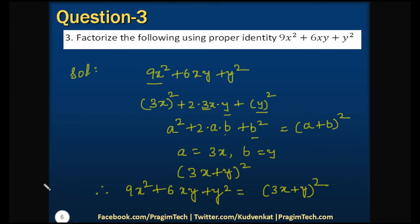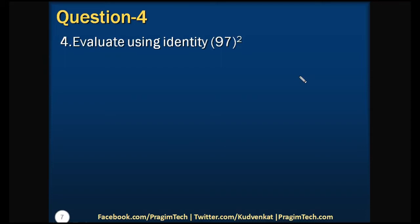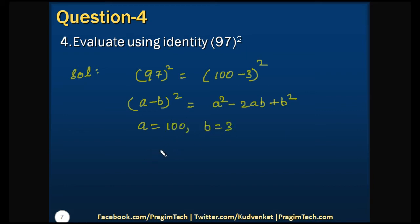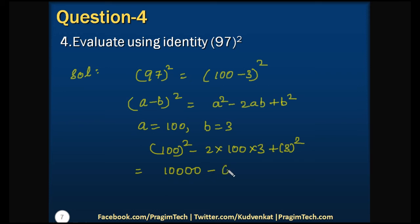Let's look at question number four: evaluate 97² using an identity. Instead of direct multiplication, we write 97 as (100 - 3)², which is in the form (a - b)² = a² - 2ab + b². Here a = 100 and b = 3. Substituting: 100² - 2 × 100 × 3 + 3² = 10000 - 600 + 9 = 9409.